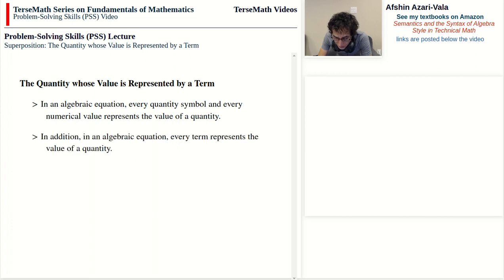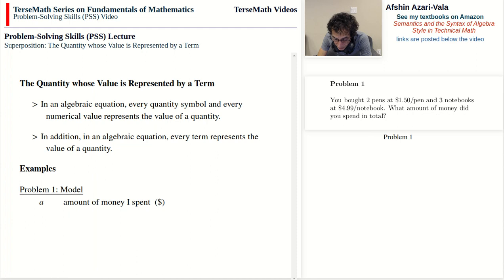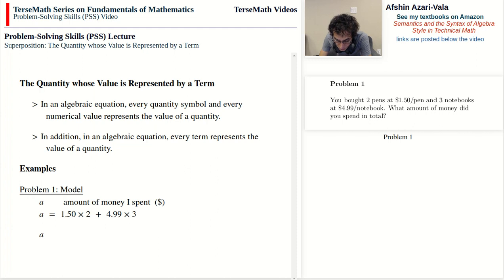Let me explain what I mean through examples. Problem 1 says: you bought two pens at $1.50 per pen and three notebooks at $4.99 per notebook. What amount of money did you spend in total? This word problem can be modeled by setting A as the amount of money spent in dollars. Then A equals 1.5 times 2 — the amount spent on pens — plus 4.99 times 3, which represents the amount spent on the notebooks.